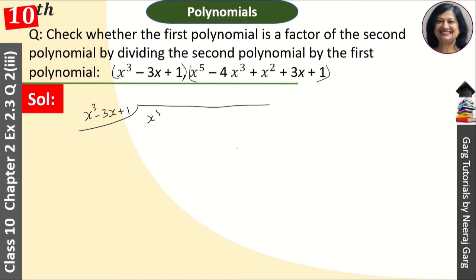And here is x to the power 5 minus 4x cube plus x square plus 3x plus 1. First to say second to divide it. So if we divide it, we always keep in the middle of it.